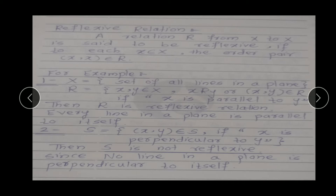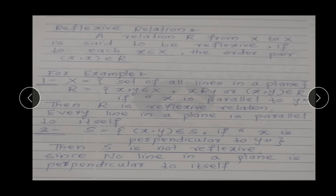Reflexive relation: A relation capital R from X to X is said to be reflexive if, to each x belonging to capital X, the ordered pair (x, x) belongs to R. अगर हमें कोई भी relation दिया हुआ है, तो हमारा relation reflexive कब कहलाएगा? अगर हर element जो हमारे set में present है, वो खुद से ही related हो — means x is R related to x, and we write (x, x) belongs to R — तब हमारा relation कहलाएगा reflexive relation.